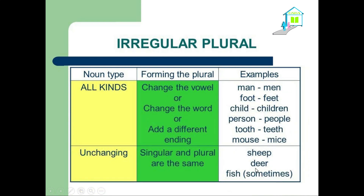Now we have some other irregular plurals — all kinds of completely irregular forms. For example: man → men (we change A into E), foot → feet, child → children, person → people, tooth → teeth, mouse → mice. Those plurals are different from the previous ones.